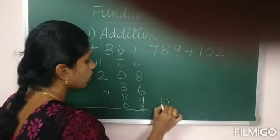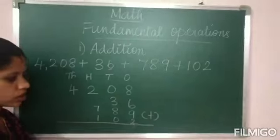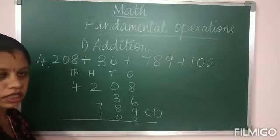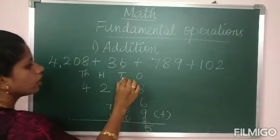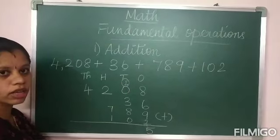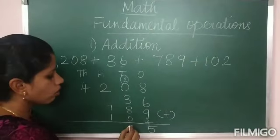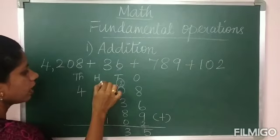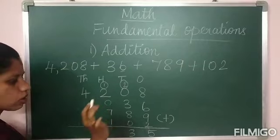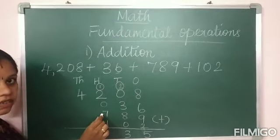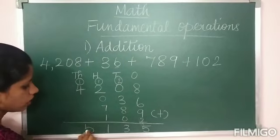Now add all these numbers. Ones column: 8 plus 6 is 14, 14 plus 9 is 23, 23 plus 2 is 25. Write 5, regroup 2 to the tens place. Tens column: 2 plus 0 is 2, 2 plus 3 is 5, 5 plus 8 is 13, 13 plus 0 is 13. Write 3, carry over 1. Hundreds column: 1 plus 2 is 3, 3 plus 7 is 10, 10 plus 1 is 11. Write 1, carry over 1. Thousands column: 4 plus 1 is 5.